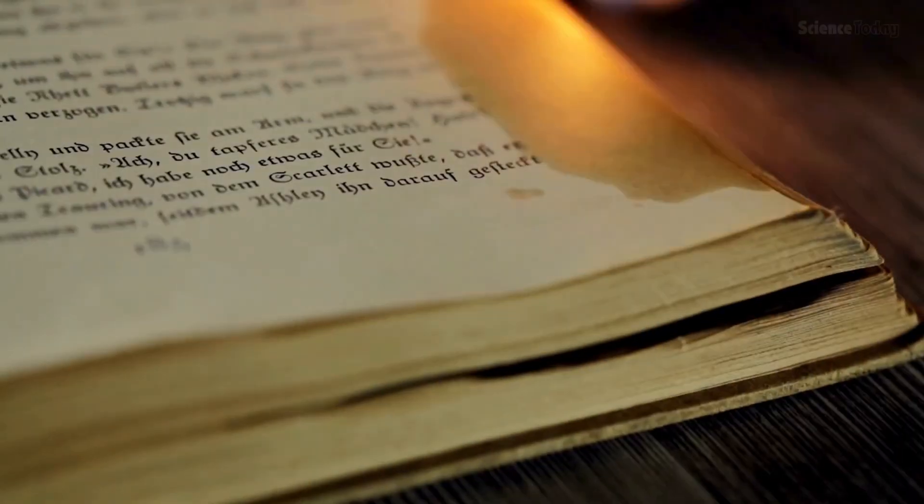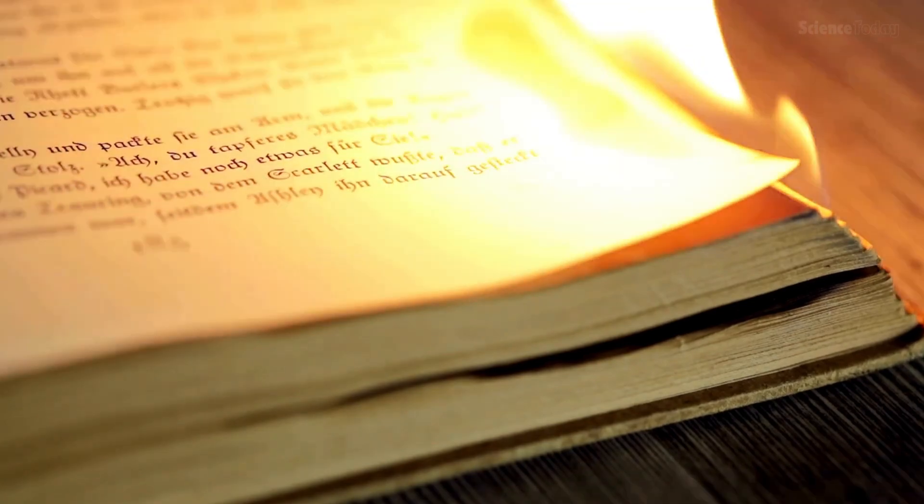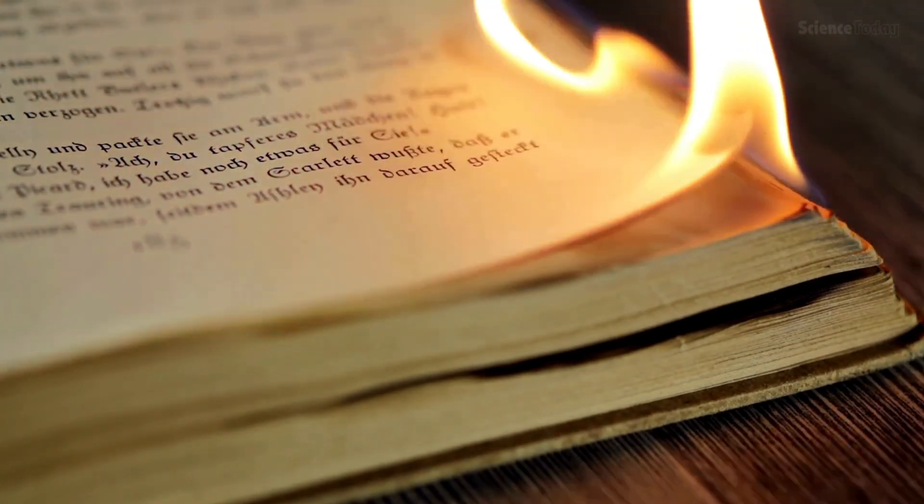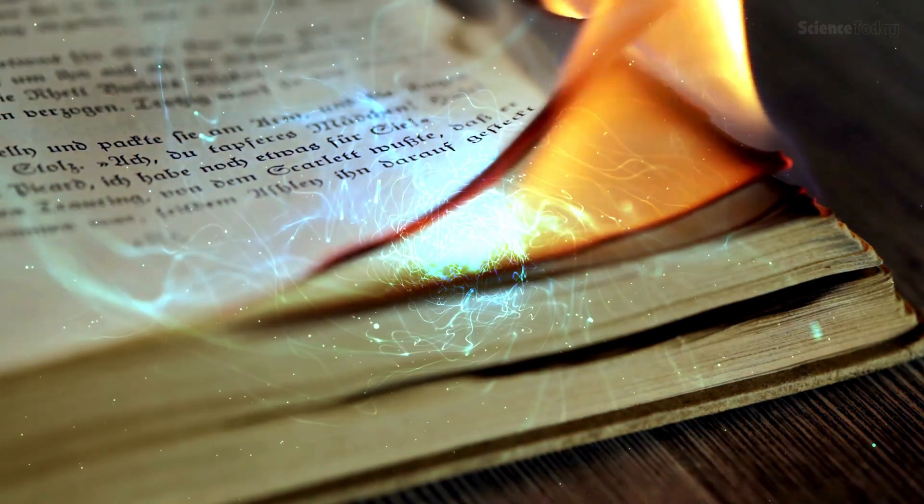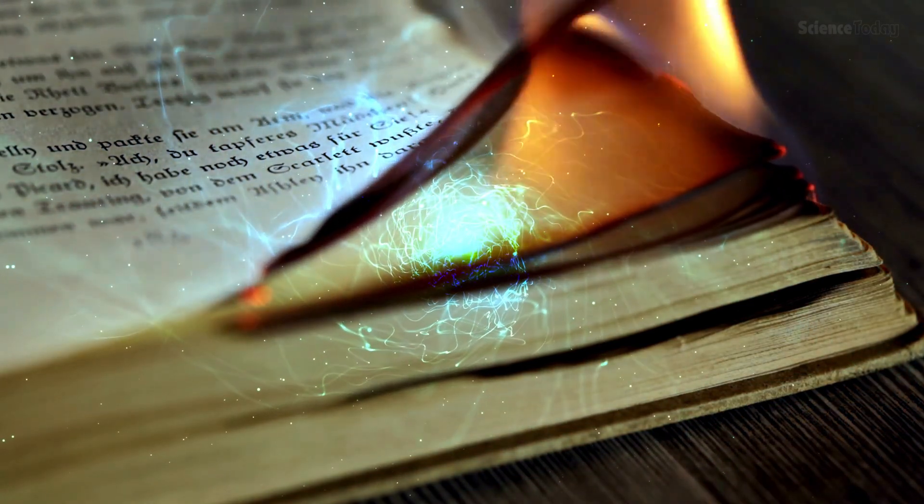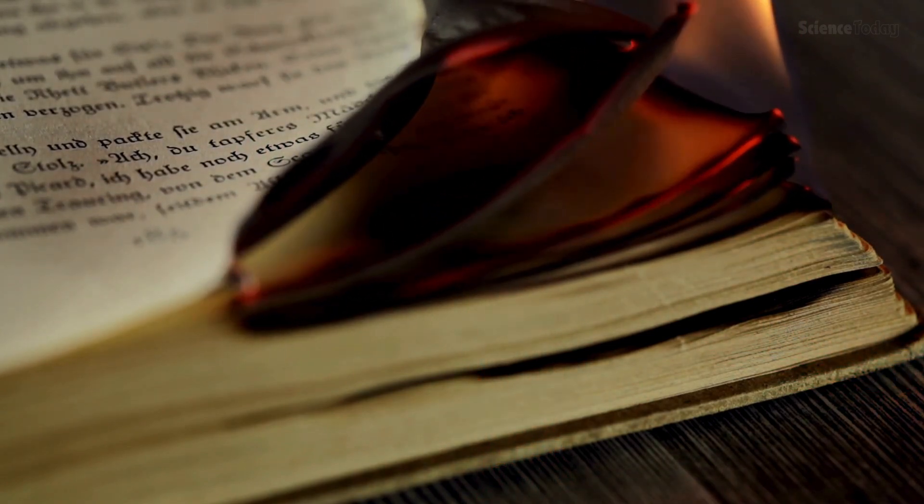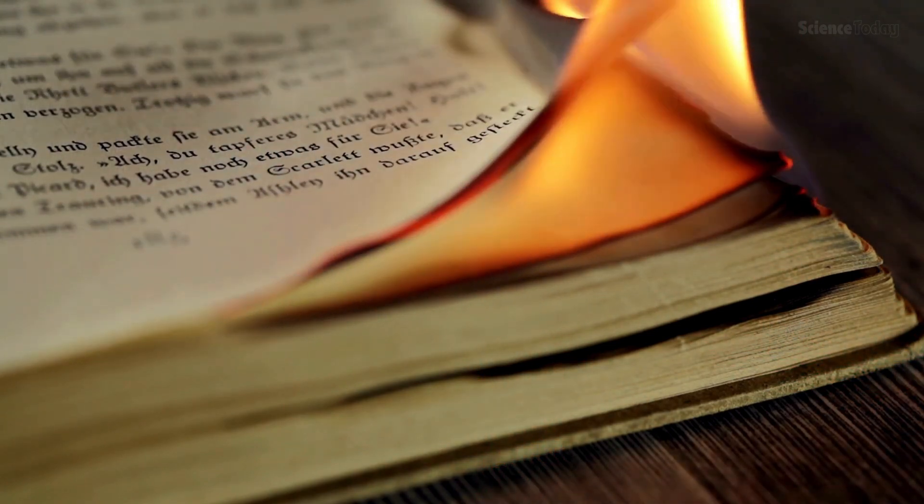Here's the crucial part. Quantum mechanics insists that information is indestructible. It can be transformed. Burn a book and you get ash, smoke, and heat. But the information about the book's composition is still theoretically recoverable. If you could meticulously track every atom and wave of radiation from the fire, you could reconstruct the original book. The information hasn't disappeared. It's just scrambled.